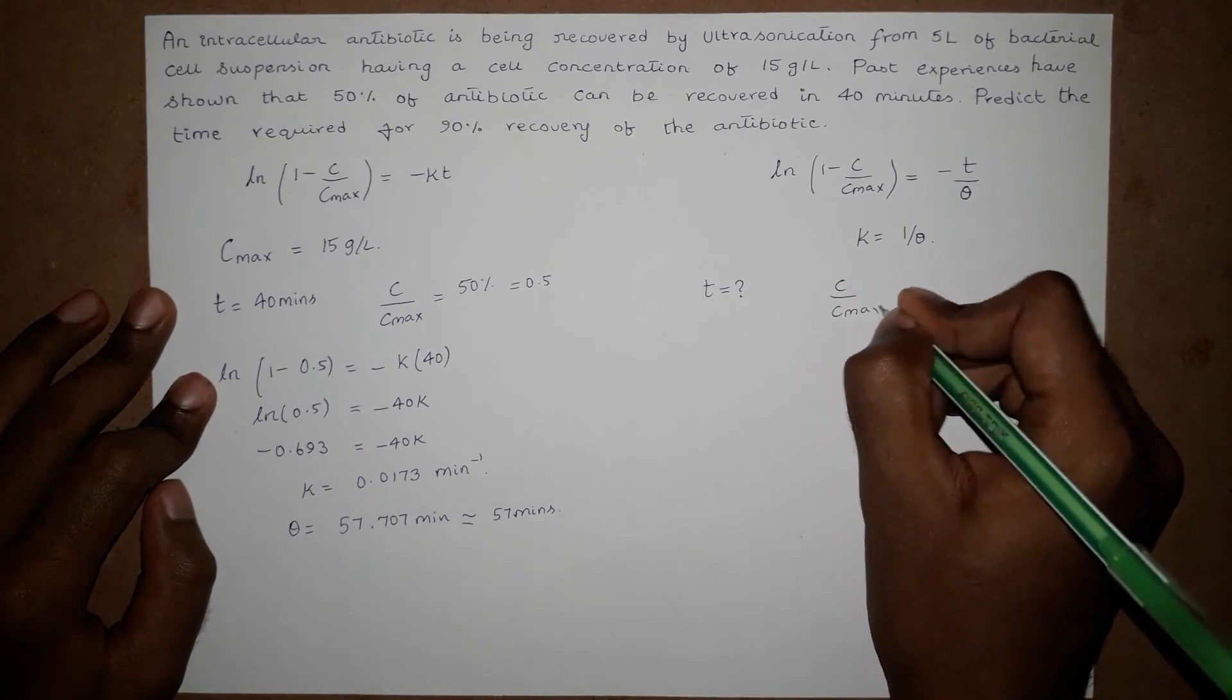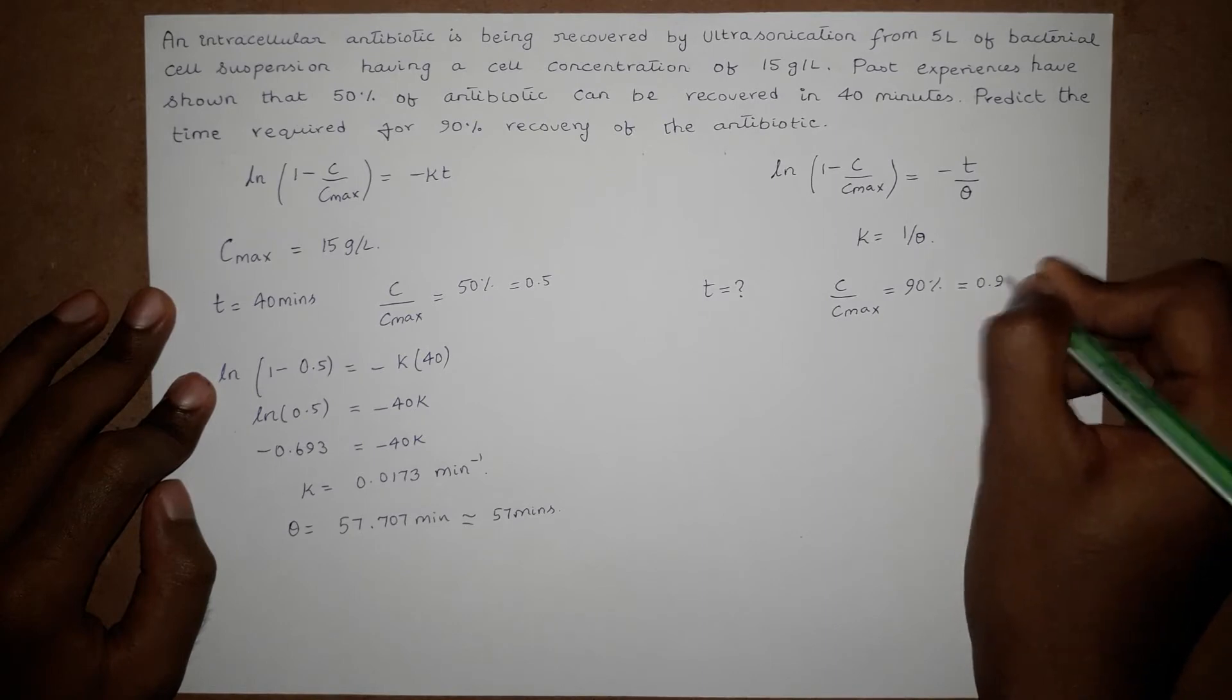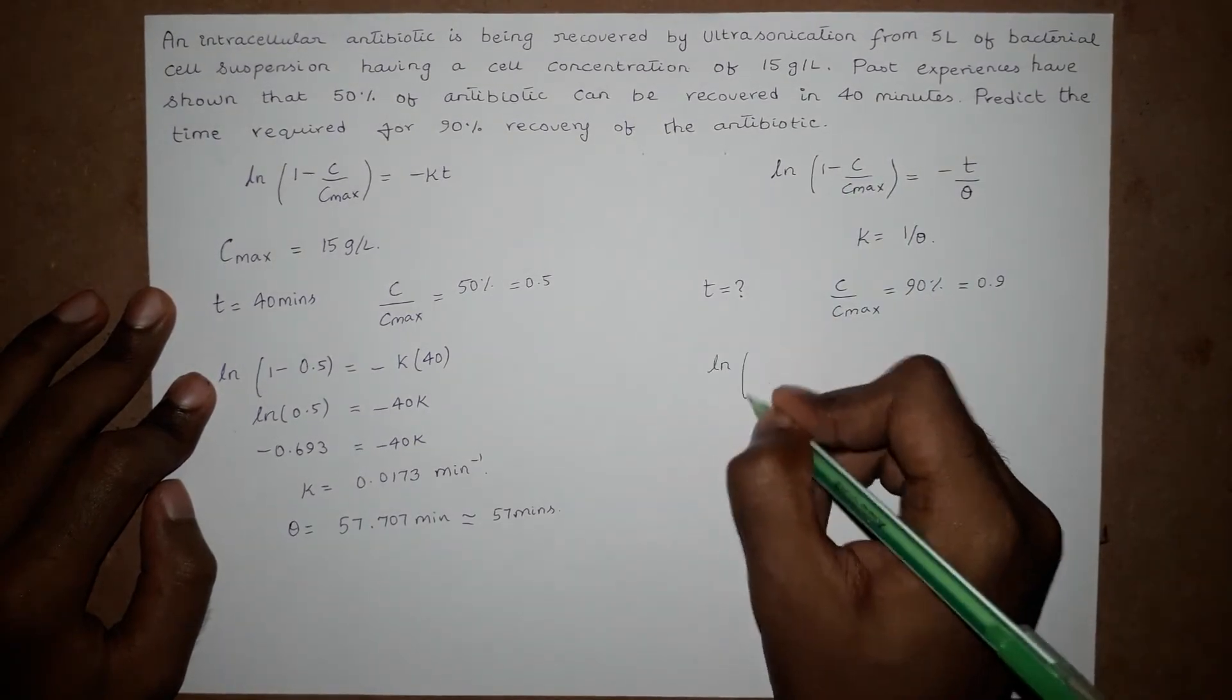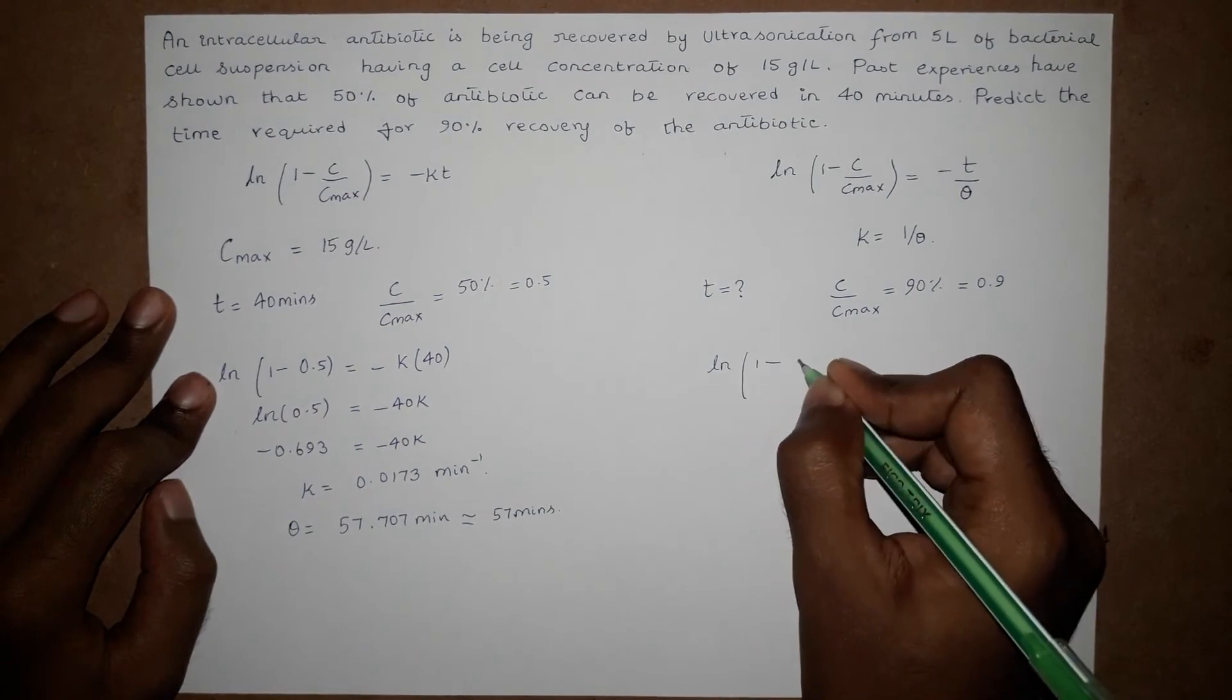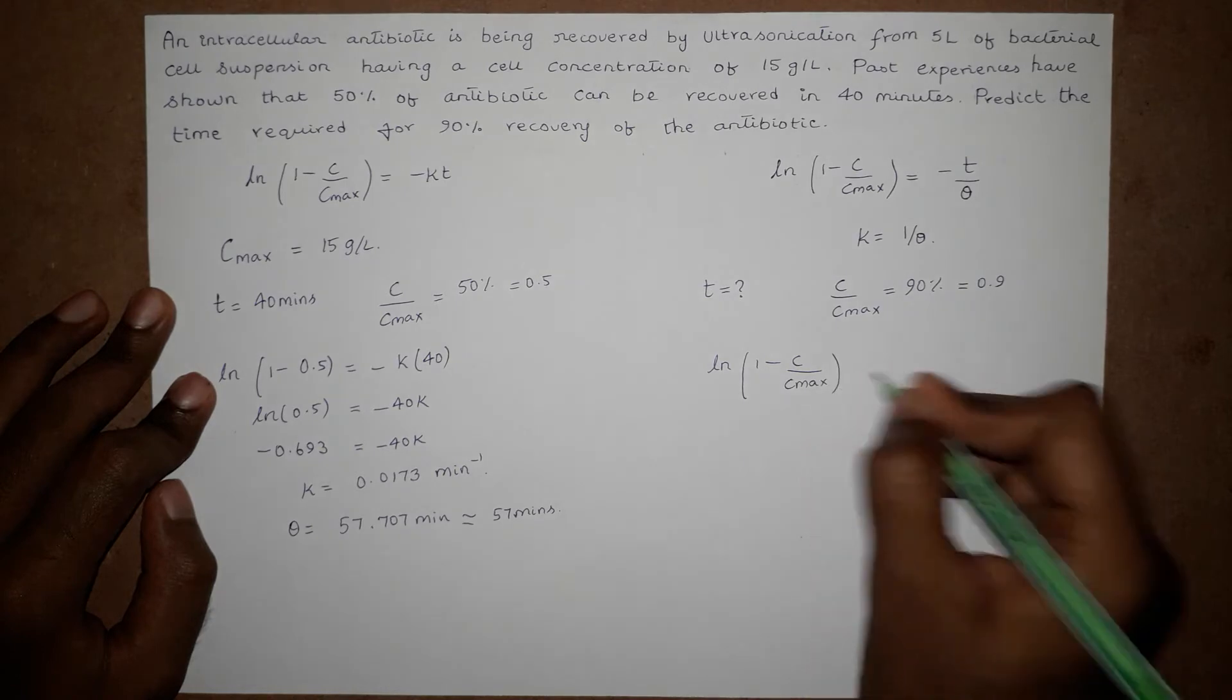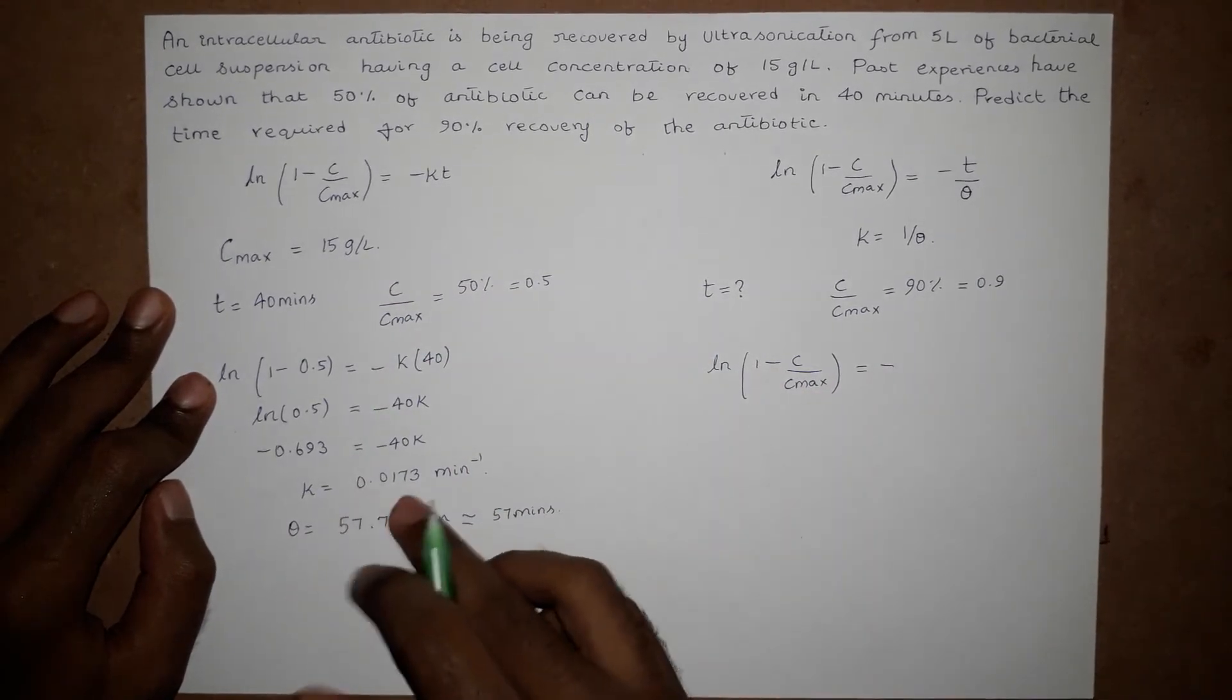For 90% recovery, C by Cmax equals 90%, that is 0.9. We substitute this in the equation: ln of (1 - C by Cmax) equals negative K T, that is negative K found to be 0.0173 per minute times T.